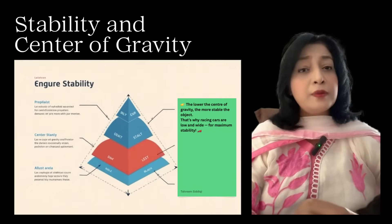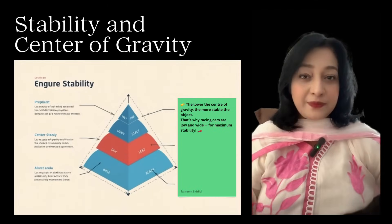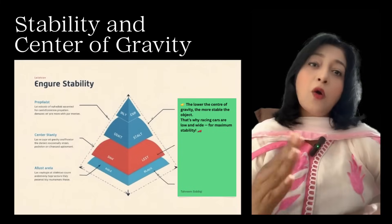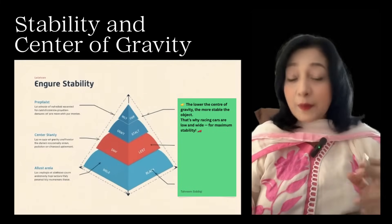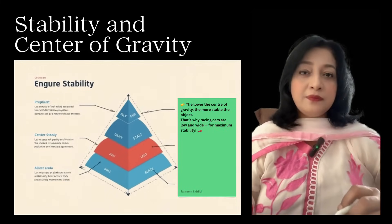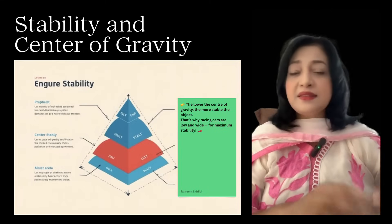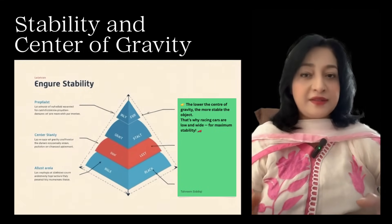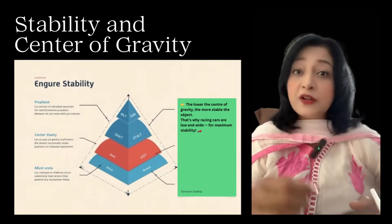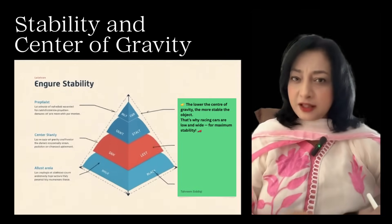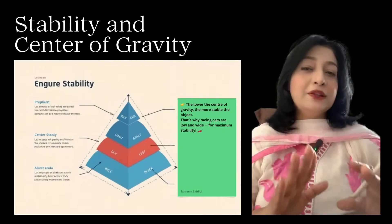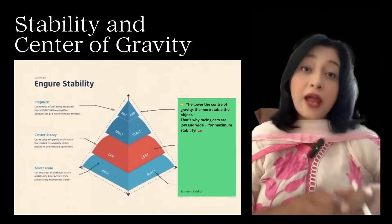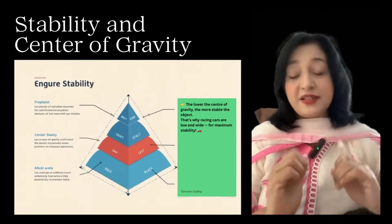For example, a cone balanced on its tip — the center of gravity falls when tilted and the object topples. Number three: neutral equilibrium — when displaced, it stays in the same position. For example, a ball rolling on a flat surface. The lower the center of gravity, the more stable the object. That's why racing cars are low and wide for maximum stability.